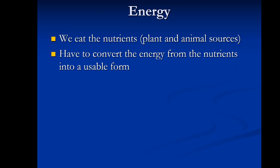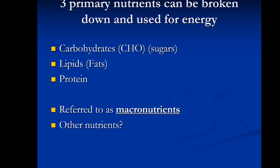We take in nutrients — carbohydrates, fats, and proteins — but we can't directly use that energy in that form; we have to convert it into a usable form. The three primary nutrients that can be broken down and used for energy transfer are carbohydrates (sometimes referred to as sugars), fats or lipids, and protein. These are referred to as macronutrients because we need a fair amount of them compared to micronutrients like vitamins and minerals.